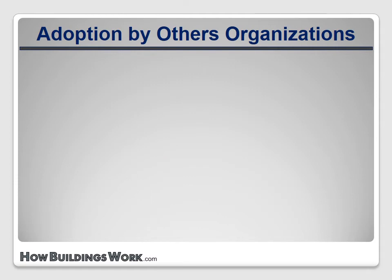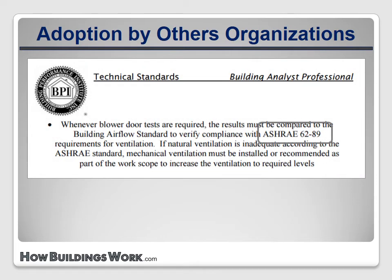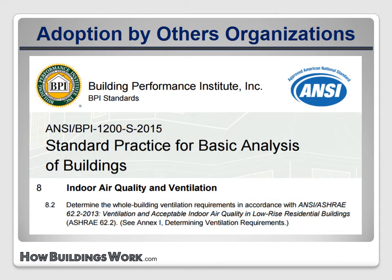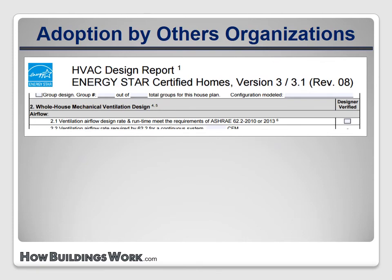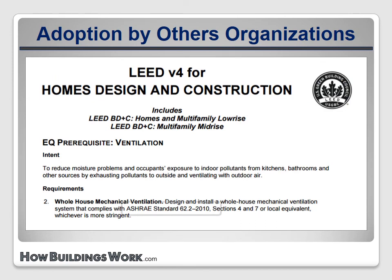As seems to be typical for the residential building industry, we can't seem to all agree on a common standard, so different programs have adopted different versions of ASHRAE 62. The BPI Building Analyst standard still references the 1989 version. The newer BPI 1200 standard references the 2013 version. The standard work specifications created by the U.S. Department of Energy and NREL to guide the Weatherization Assistance Program require the use of the latest version within one year of release — so agencies must transition to the 2016 version by the end of 2017. Energy Star for New Homes gives participating builders the option to choose between the 2010 and 2013 versions of ASHRAE 62.2. LEED for Homes requires compliance with the 2010 version.